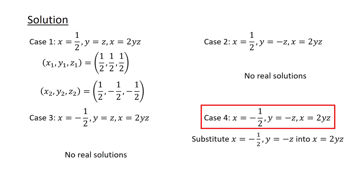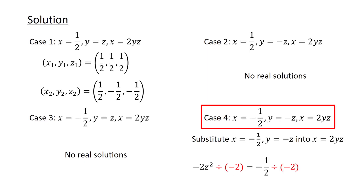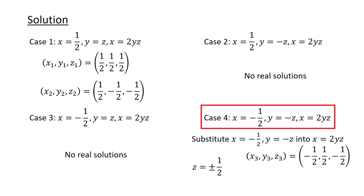For Case 4, we substitute x equals minus half and y equals minus z into the equation x equals 2yz, to obtain minus 2z squared equals minus half. After dividing by minus 2, we get z squared equals one quarter. Taking the square root, we obtain z equals half or z equals minus half. Therefore, we obtain 2 more solutions: x3 equals minus half, y3 equals half, z3 equals minus half; and x4 equals minus half, y4 equals minus half, z4 equals half.